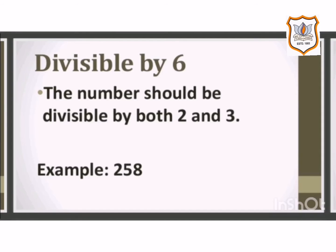The next rule is divisible by 6. If a number is divisible by both 2 and 3, then the number is divisible by 6 — it must fulfill the divisibility rule of both 2 and 3. For example, in 258, the unit digit is 8, so according to the rule for divisibility by 2, it is divisible by 2. And if we add 2 plus 5 plus 8, we get 15, which is a multiple of 3, so the number is divisible by 3 also. Therefore, 258 is divisible by 6.